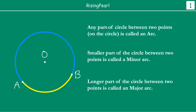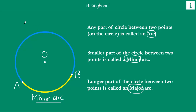We call them major arc and minor arc. Any part of a circle between two points is called an arc. The smaller part between two points is called the minor arc. In this case, the arc A-B highlighted in yellow — this is the minor arc, because this is the smaller length compared to the other part B-A. The larger or greater part of the circle between two points is called the major arc. This one highlighted in blue is the major arc.